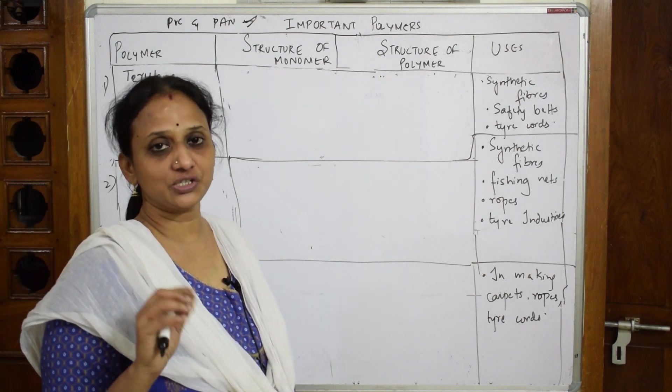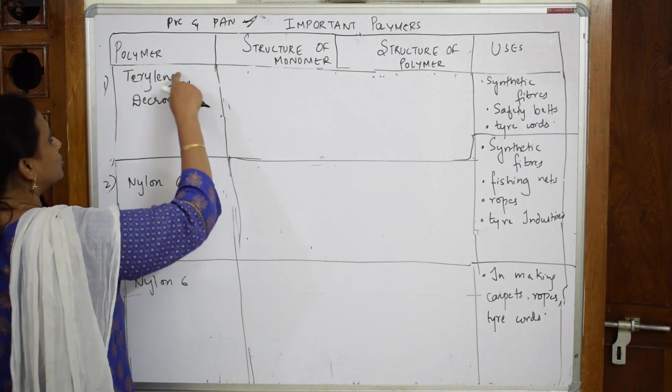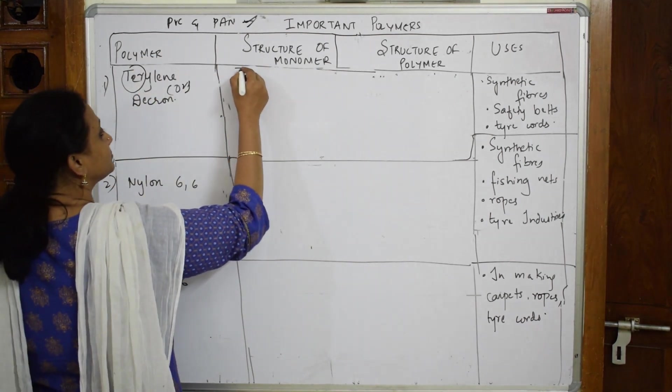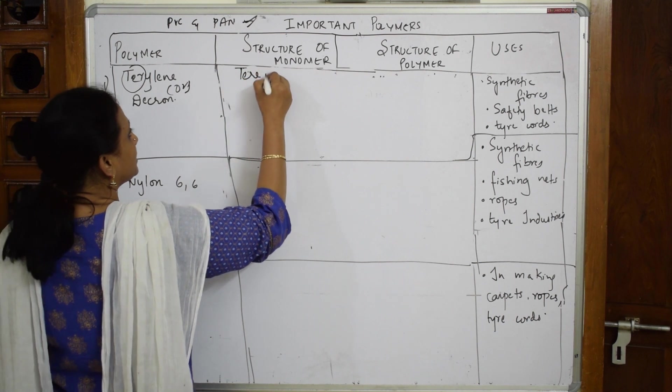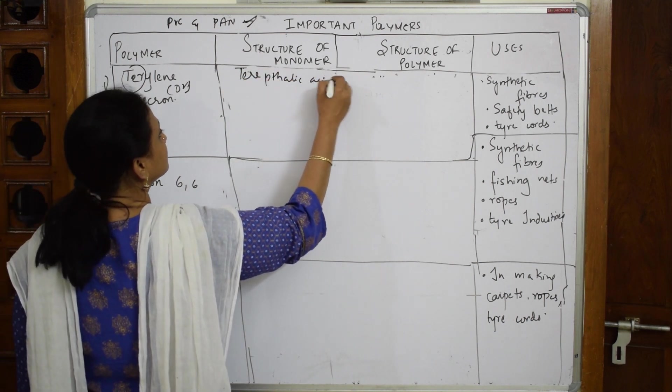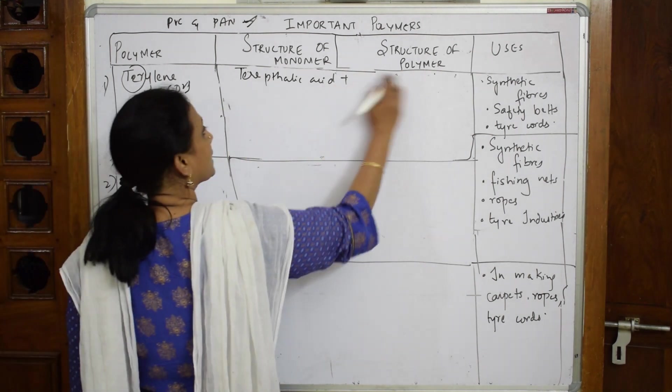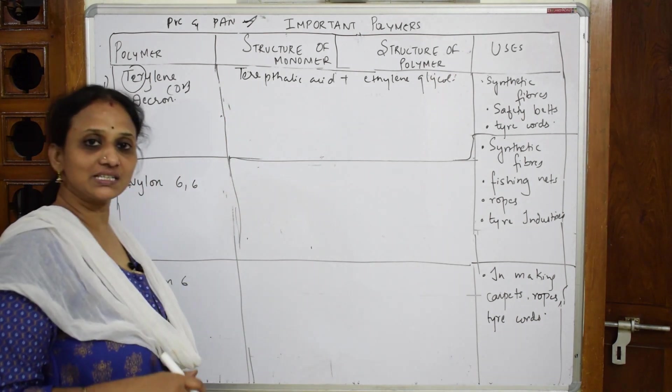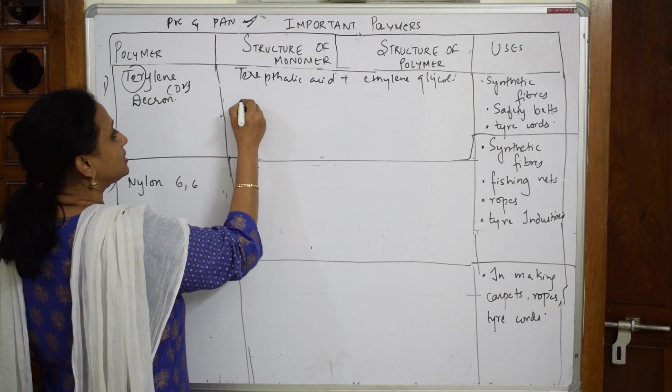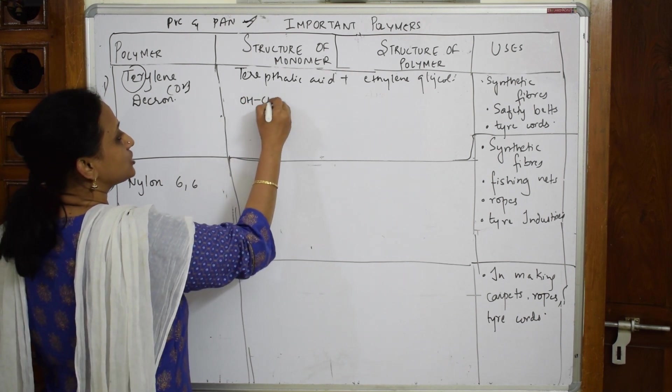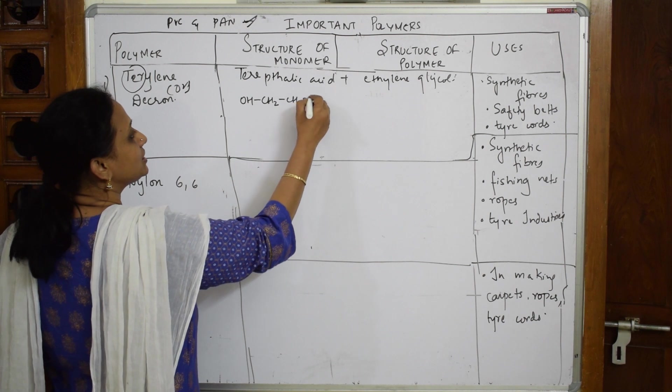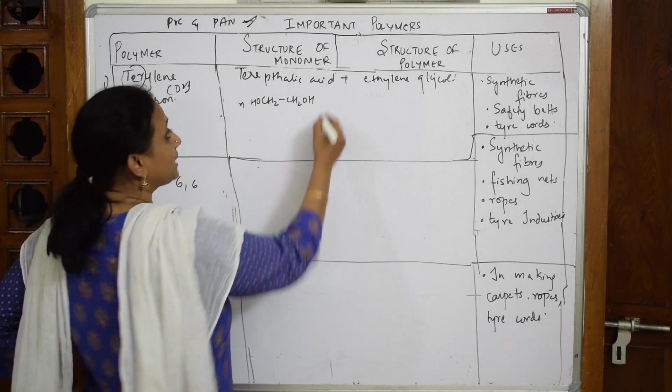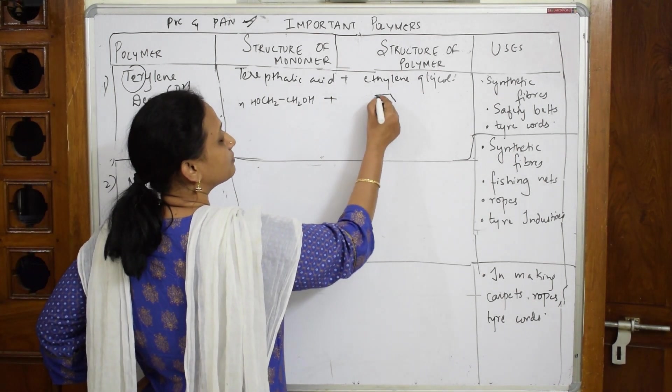Now I have to speak about Dacron or Terlin, whose uses are already given. As the name suggests, there means terephthalic acid and ethylene glycol. I'm writing both the structures to see how we're going to condense. I'm going to start with ethylene glycol: OH-CH2-CH2-OH. This is ethylene glycol. I'll take N moles. I'm going to condense this with terephthalic acid. You have a benzene ring in the center.